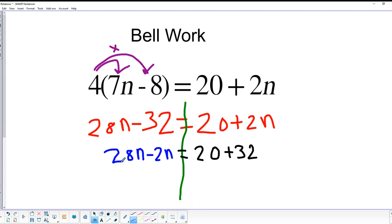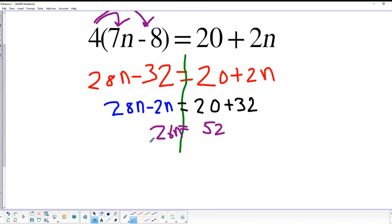And then when we simplify the left side, we get 26n, and the right side becomes 52. So now all we have to do is give ourselves a little more space. We're going to divide both sides by 26, and our final answer is n equals 2. So if that's what you got when you tried that problem, you did it just right.